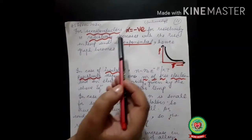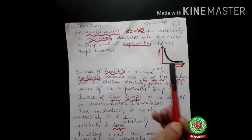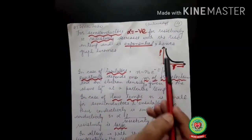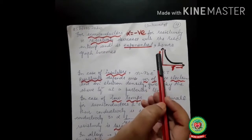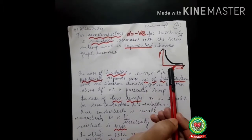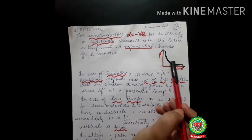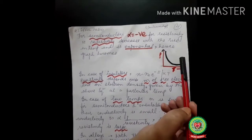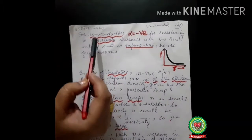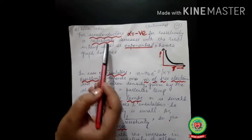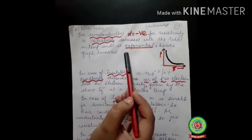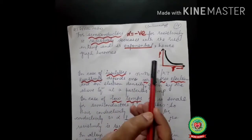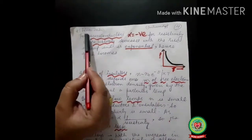For semiconductors, alpha is negative, meaning resistivity decreases with the rise in temperature, and that decrease is in exponential form. The graph for resistivity versus temperature for semiconductors goes downward exponentially.